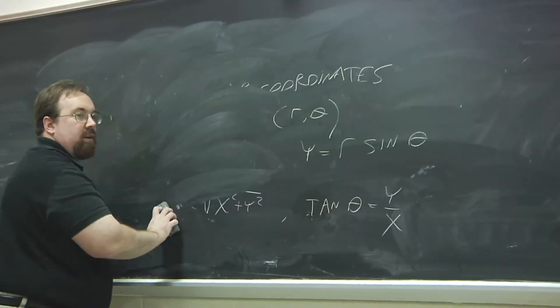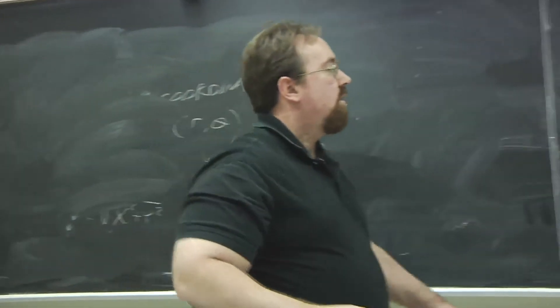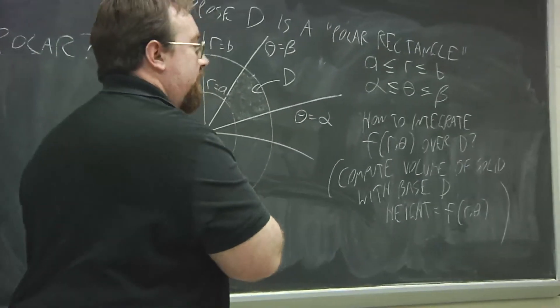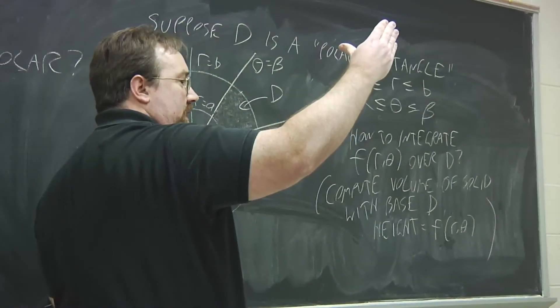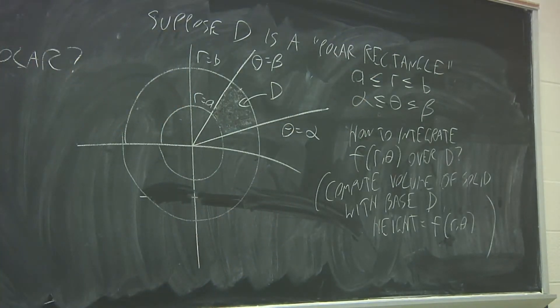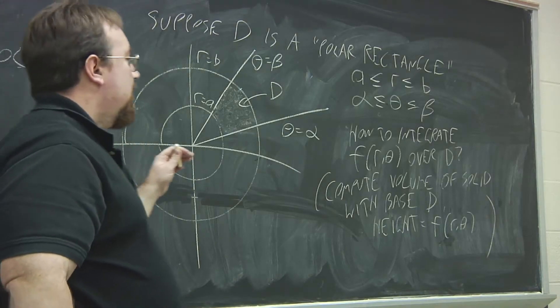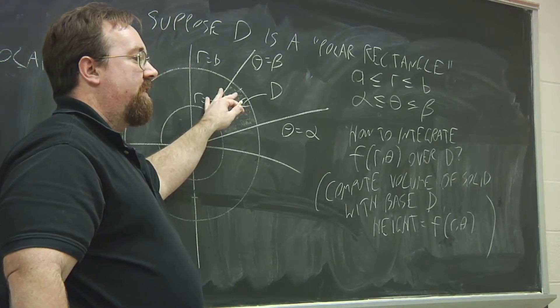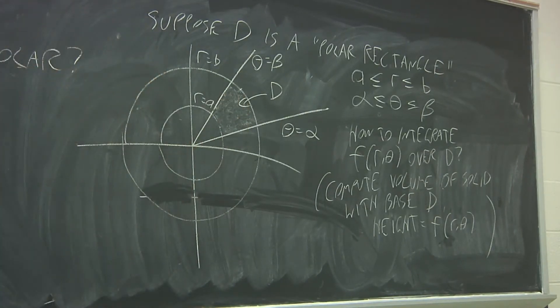Student: It's like a sphere, right? Instructor: Actually, what we're seeing here is still two dimensions. So if f of r theta is coming out from the board, that'd be three dimensions. Yes, a solid, but the point is we're integrating over a two-dimensional region. I'll draw a situation here.